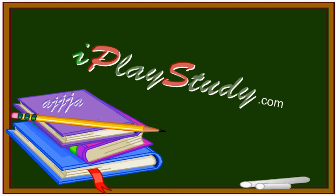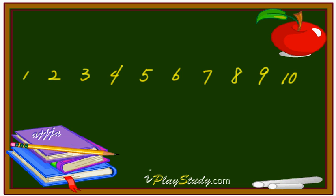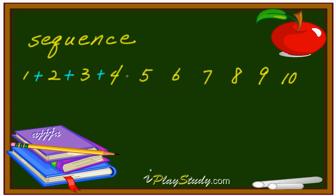Let's play study. One, two, three, four, five, all the way to ten — that's right. We call this a sequence. But what if we add everything? Like one plus two plus three plus... with a plus sign all the way? In this case we're gonna have the sum, or we can call it the total.